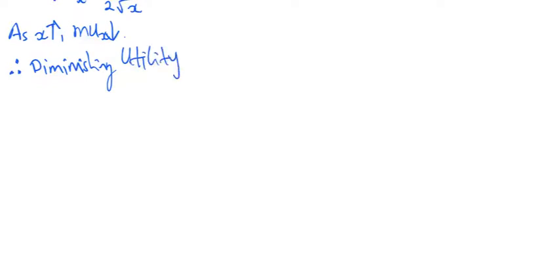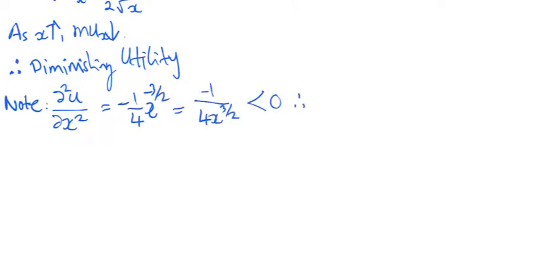This can also be verified by taking the second derivative and confirming that it is negative. The utility is increasing at a decreasing rate for good x. Hence, we can say that x enters a utility function non-linearly.